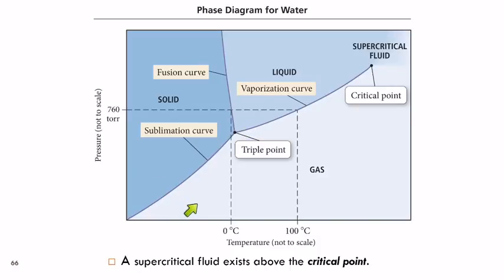This is a sublimation curve. At zero degrees Celsius and one atmosphere, things will melt. But if we get down here, we can get sublimation, which will also depend on the pressure.